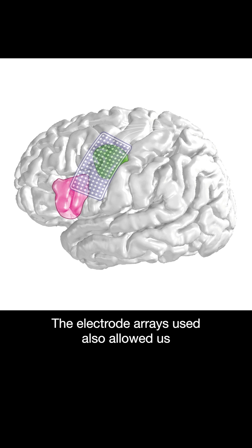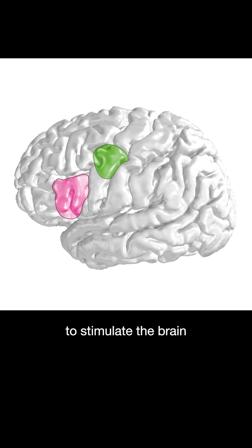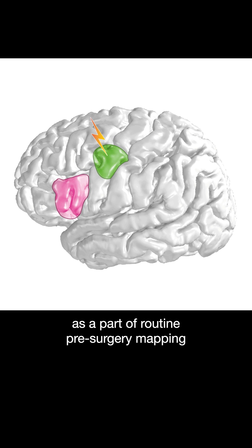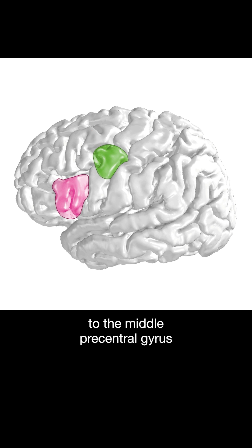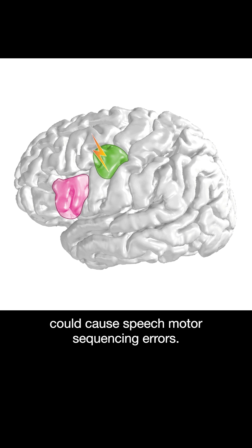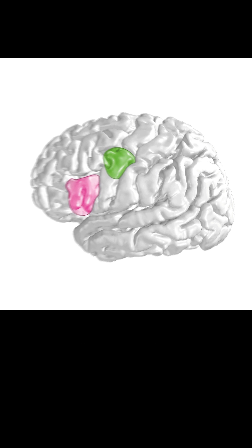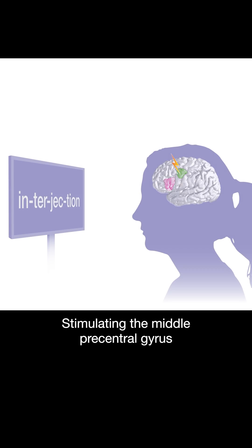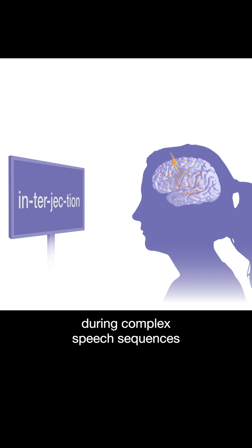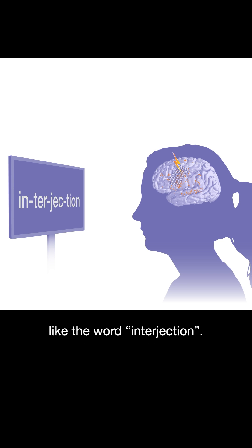The electrode arrays used also allowed us to stimulate the brain as part of routine pre-surgery mapping, and directly test if a temporary disruption to the middle precentral gyrus could cause speech motor sequencing errors. Stimulating the middle precentral gyrus caused speech errors during complex speech sequences, like the word 'interjection'.